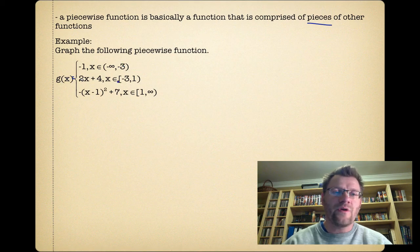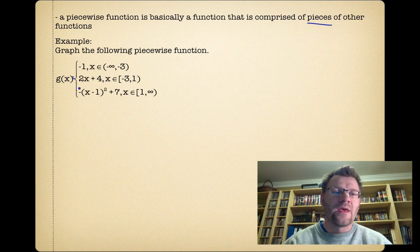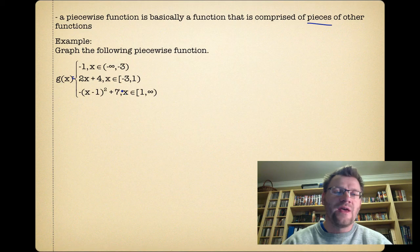g(x) is equal to 2x + 4, and that's when x is between negative three and one, not including one. And g(x) is equal to negative (x - 1)² + 7, and that's when x is between one and infinity.